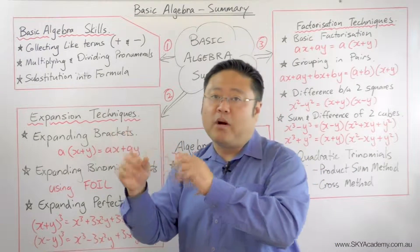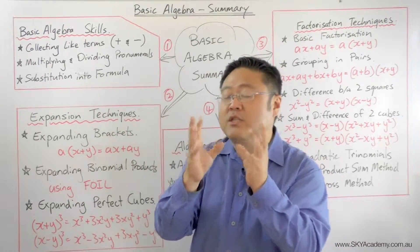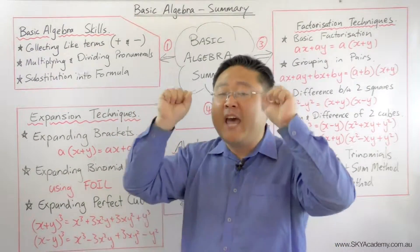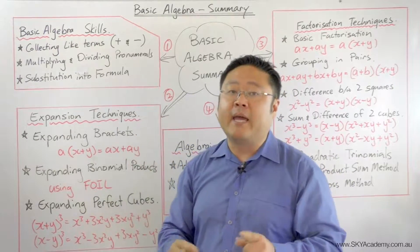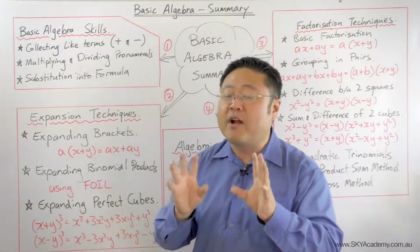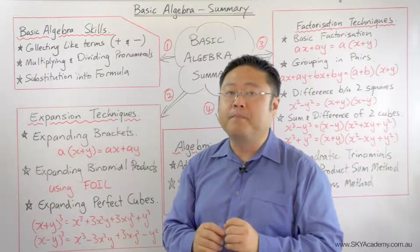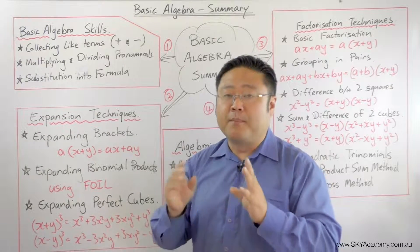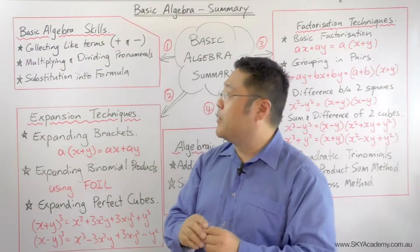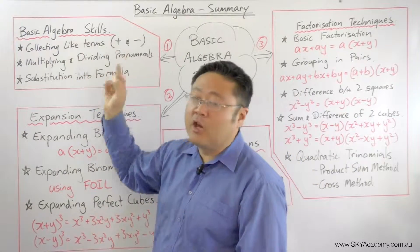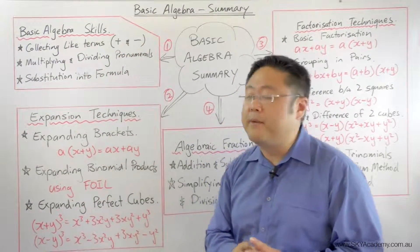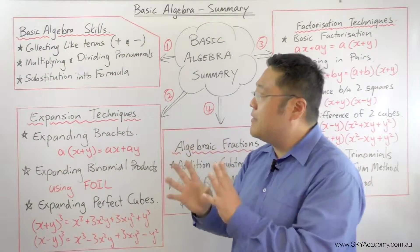For example, you can add X's with X's, Y's with Y's, XY's with XY's, or combinations of letters with combinations of letters — but the combinations have to be the same. You add the coefficients, or the numbers in front of the pronumeral term, together. So that's collecting like terms — plus and minus.